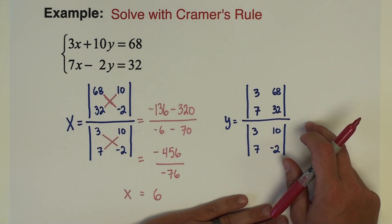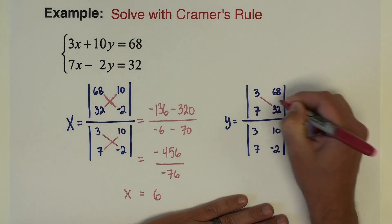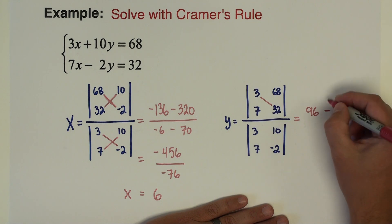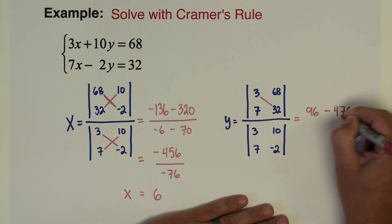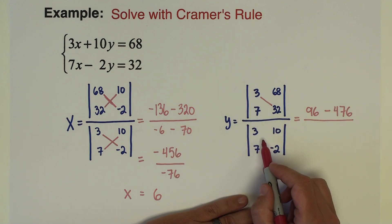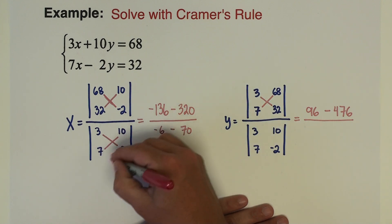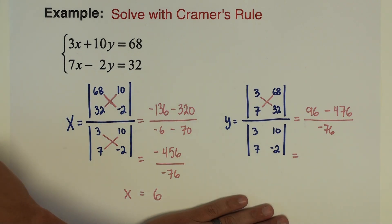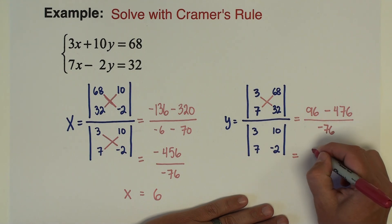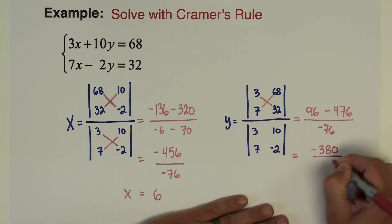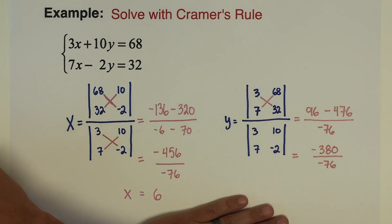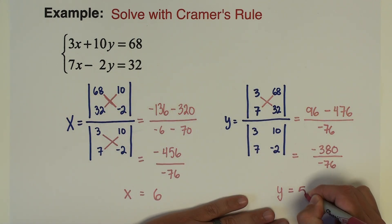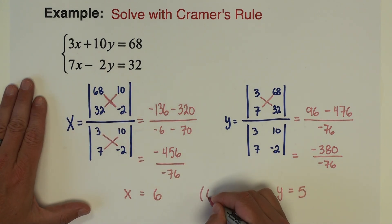For y: 3 times 32 is 96, minus 7 times 68 is 476. The denominator is the same determinant we already computed — negative 76 — so no need to redo it. We have 96 minus 476 = negative 380, divided by negative 76, which gives y equals 5. So the solution to this system is the ordered pair (6, 5).